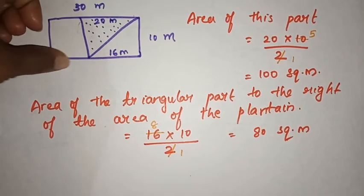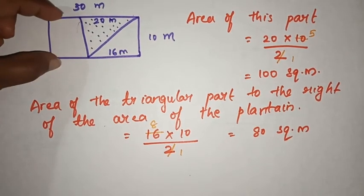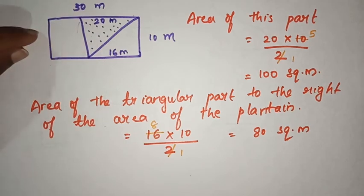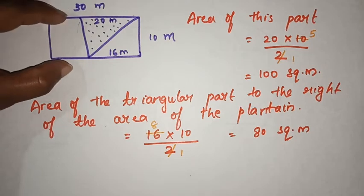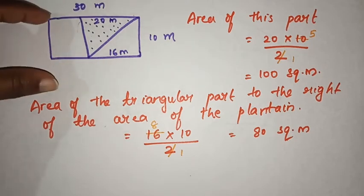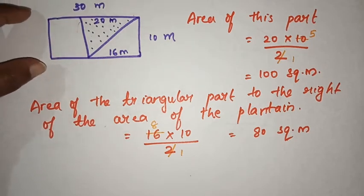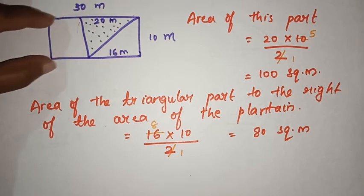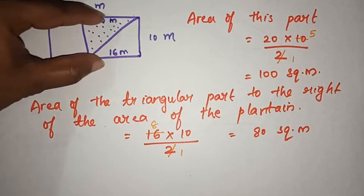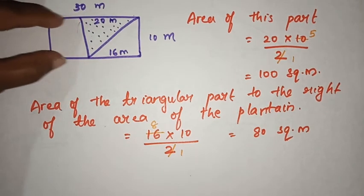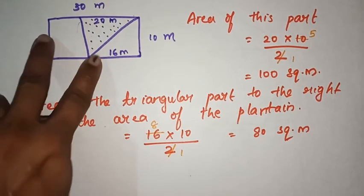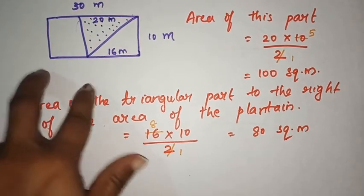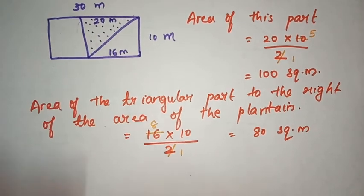This is a trapezoid. How do you think about this figure? Because this is a trapezoid, what are the two lines? They are parallel. Some sides are parallel and some are not parallel.